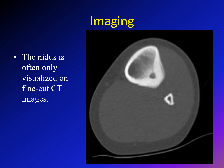The nidus can only be seen on fine-cut CT. On the CAT scan of this tibia, you can see a small nidus surrounded by a radiolucent area, with all the surrounding sclerosis around it. On the axial cut, you can see the nidus surrounded by the radiolucent area, and on the coronal cut, you can see the radiolucent area surrounded by the massive sclerosis.